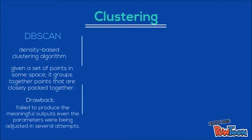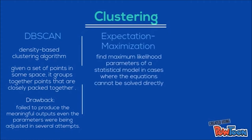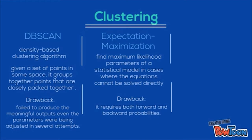The EM algorithm is used to find maximum likelihood parameters of a statistical model in cases where the equations cannot be solved directly. The outputs showed that the number of clusters produced was quite consistent and the frequency of individual clusters was also acceptable. The drawback for using it is that it requires both forward and backward probabilities.